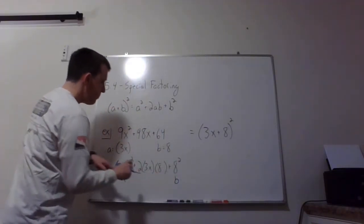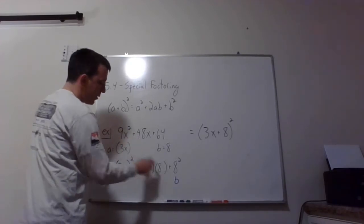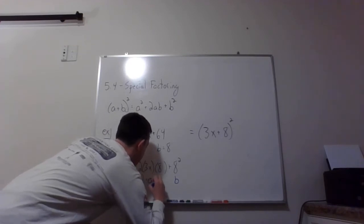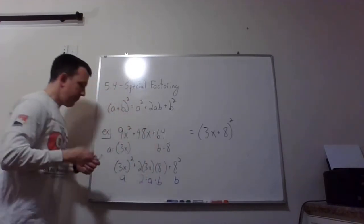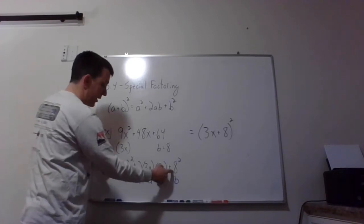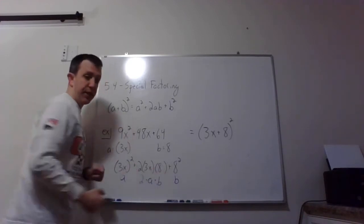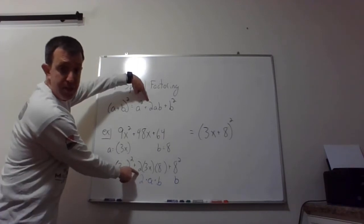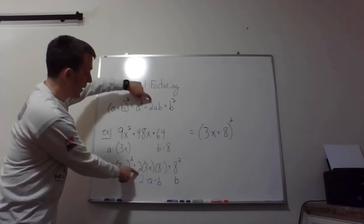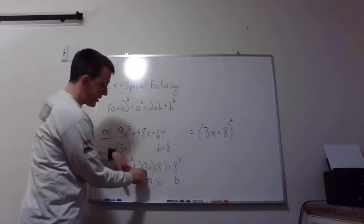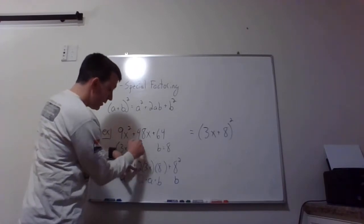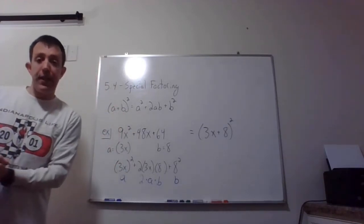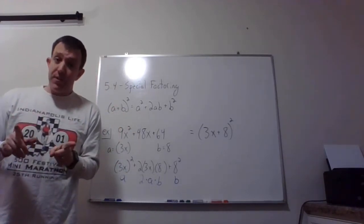And notice in the middle here we need 48x to equal 2 times a times b. So I'm basically just taking my candidates for a and b, the 3x and the 8, multiplying it all together with this extra 2 that is coming out of that special product pattern that we had. And sure enough, 2 times 3 is 6, 6 times 8 is 48, so this works. And here's why it's really, really nice if it works: you're done.